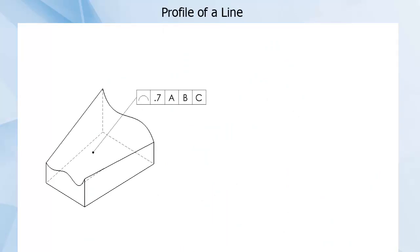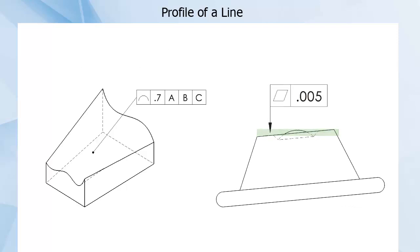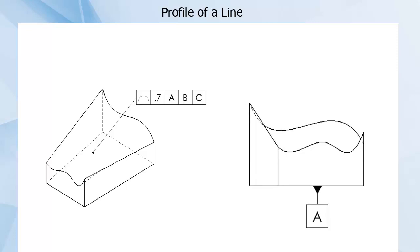When an entire surface is called out with Profile of a Line with datum references, you should have instead used Profile of a Surface. This is because, unlike circularity or flatness that operate independent of orientation, a profile that is held in place by datums can only be in a single location,